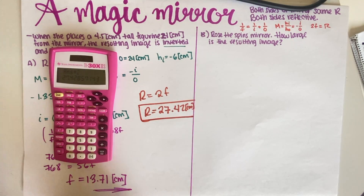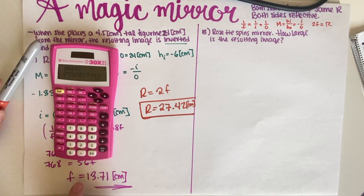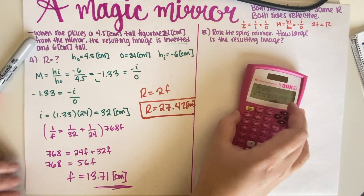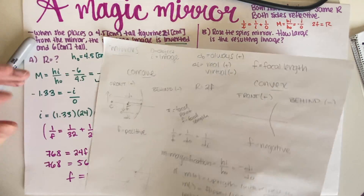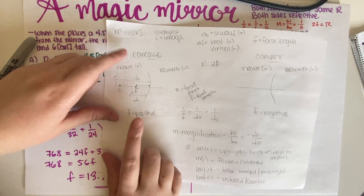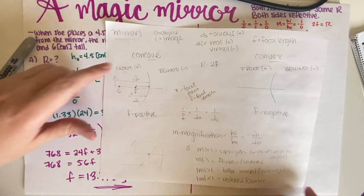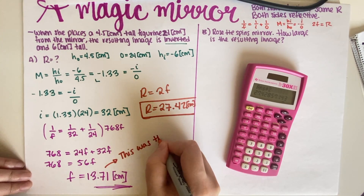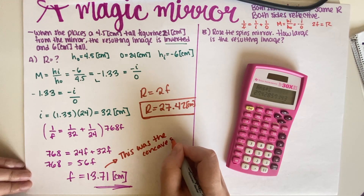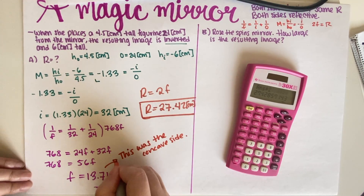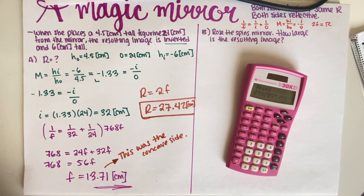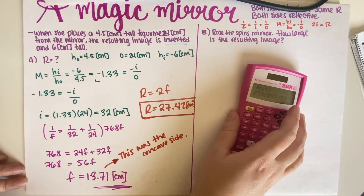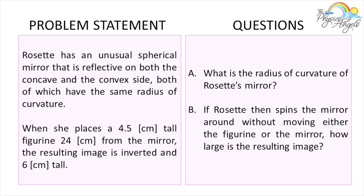An important result here is that we got a positive number for F, which means this side of the mirror is the concave side, because the concave side is the one that has F as positive. If we had gotten a negative number, that would mean we're on the convex side. This matters because Part B says: if Rosette then spins the mirror around without moving either the figurine or the mirror, how large is the resulting image?